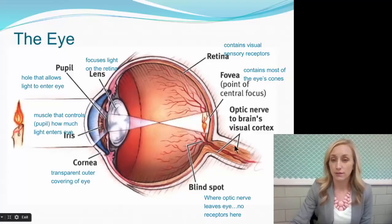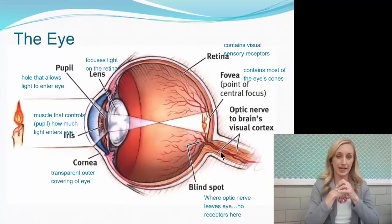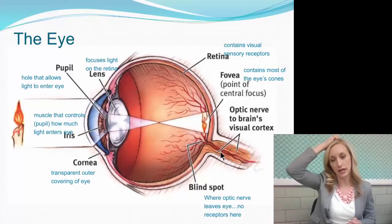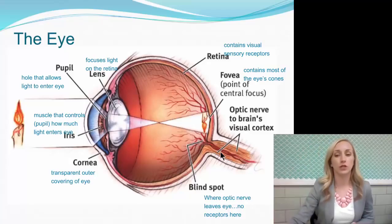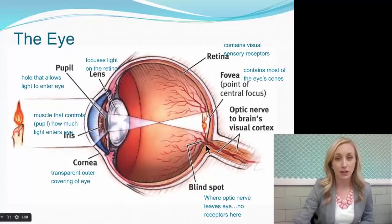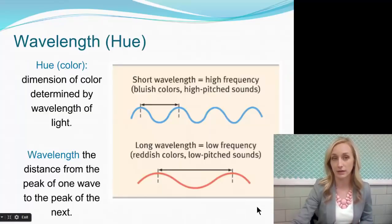Then we have the optic nerve, which is made up of a bunch of axons from different cells that carry the message to the brain — to the thalamus and then to the visual cortex. At the point where our optic nerve leaves our eye, you notice there's a gap. That's why each of our eyes has a blind spot. A blind spot exists because it's where the optic nerve leaves the eye — there are no receptors there in our retina.